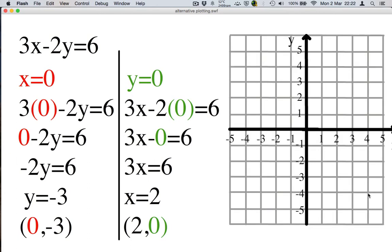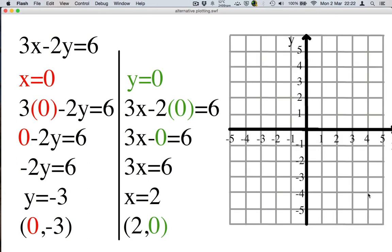Now we can graph this. We plot the point (0,-3), which is 0 across, 3 down. And then the point (2,0), which is 2 across, 0 up. And as before, we join the points with a line that goes off to infinity on both sides. Like so. Off to the edge of the graph. And that's how you can plot a line with just 2 points.